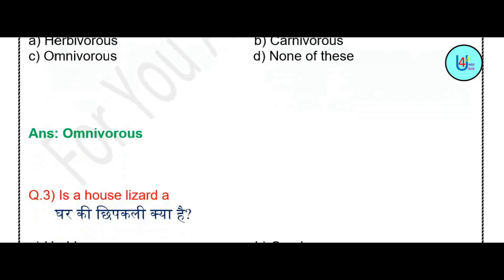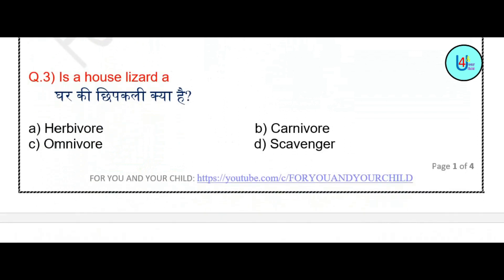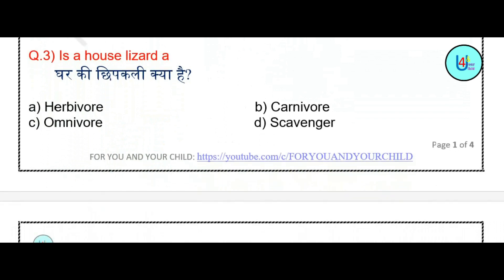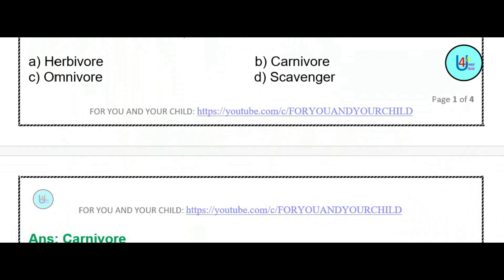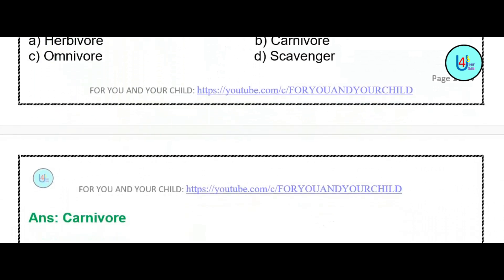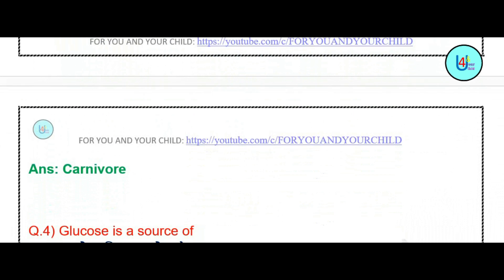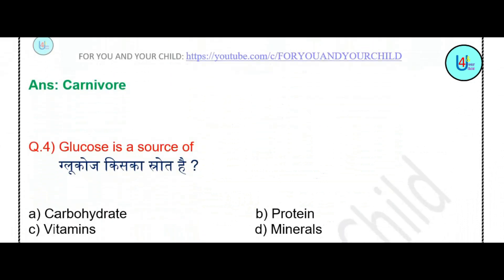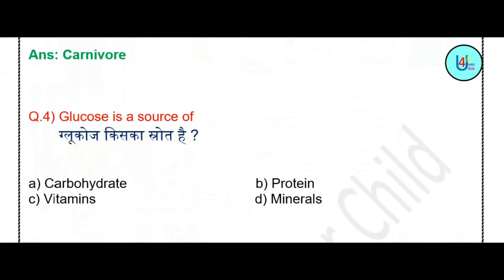Question number 3: Is a house lizard a — herbivore, carnivore, omnivore, or scavenger? The correct answer is carnivores.